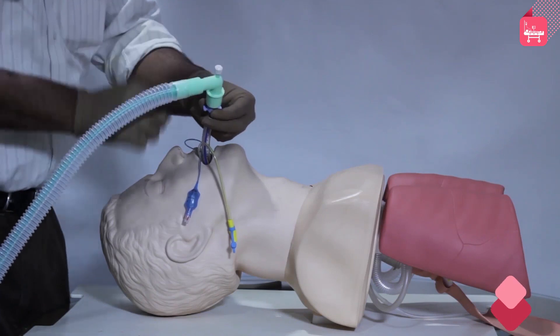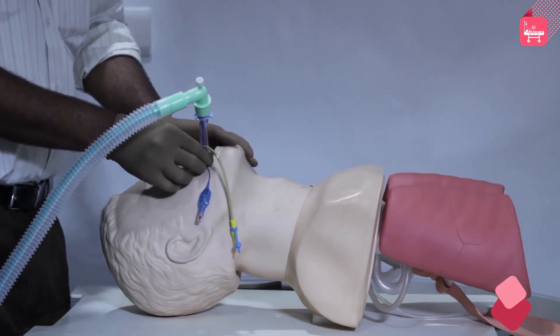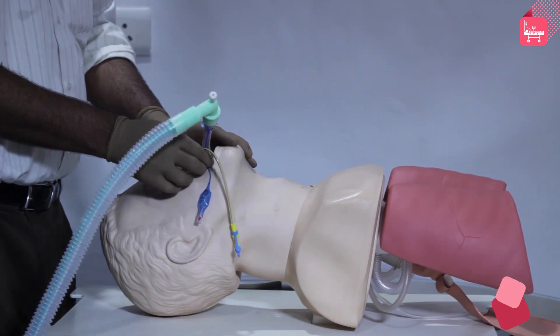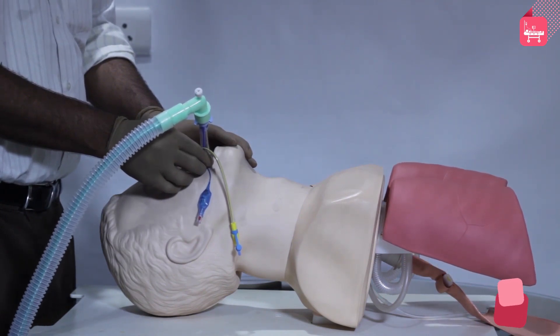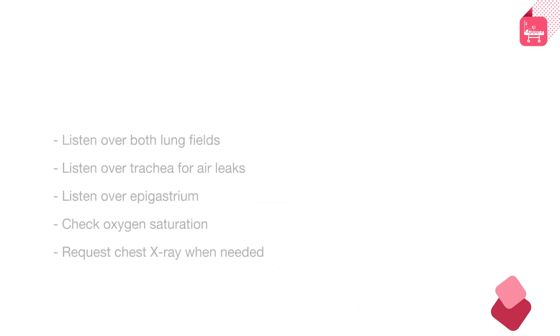Ensure correct positioning: attach the bag valve ventilator to the ET tube. Observe the chest rise on inflation. Listen over both lung fields. Listen to trachea for air leaks. Listen over the epigastrium. Check the oxygen saturation. Consider requesting a chest x-ray to confirm that the tip of the ET tube is two centimeters above the carina. If there is any doubt about the position of the tube, then remove it and oxygenate the patient.